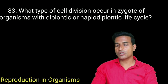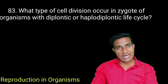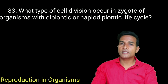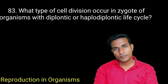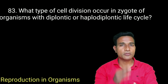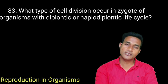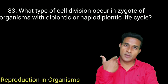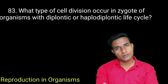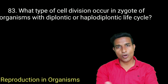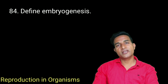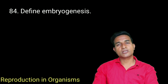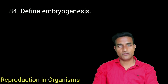What type of cell division occurs in the zygote of organisms with a haplobiontic life cycle? If the body is haploid, the zygote formed is diploid and must undergo meiosis to form a haploid body. What type of cell division occurs in organisms with a diplontic or haploid-diplontic life cycle? Here the body is diploid, gametes are haploid; when they fuse they form a diploid zygote, which divides by mitosis to produce the diploid body. Define embryogenesis — the process of development of the embryo from the zygote.